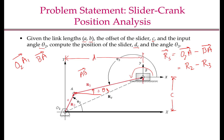Looking at vector RS, both its magnitude and direction change as the slider moves. RS can also be written as the sum of two vectors, R1 and R4, where R4 is a constant vector and R1 changes only in magnitude — its length D changes — but not in direction. So the final loop closure equation is: R2 minus R3 minus R1 minus R4 equals 0.